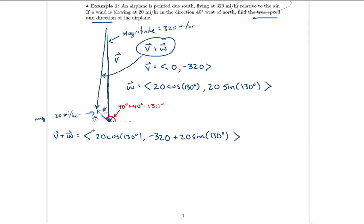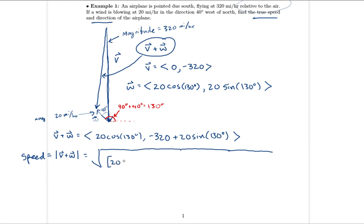This resultant vector V plus W represents the true vector for the plane accounting for both pilot intent and wind. They ask for true speed and direction, so we need the magnitude of V plus W — that's the speed. The magnitude is the square root of the x component squared plus the y component squared. When calculated, it comes out to approximately 305 miles per hour.